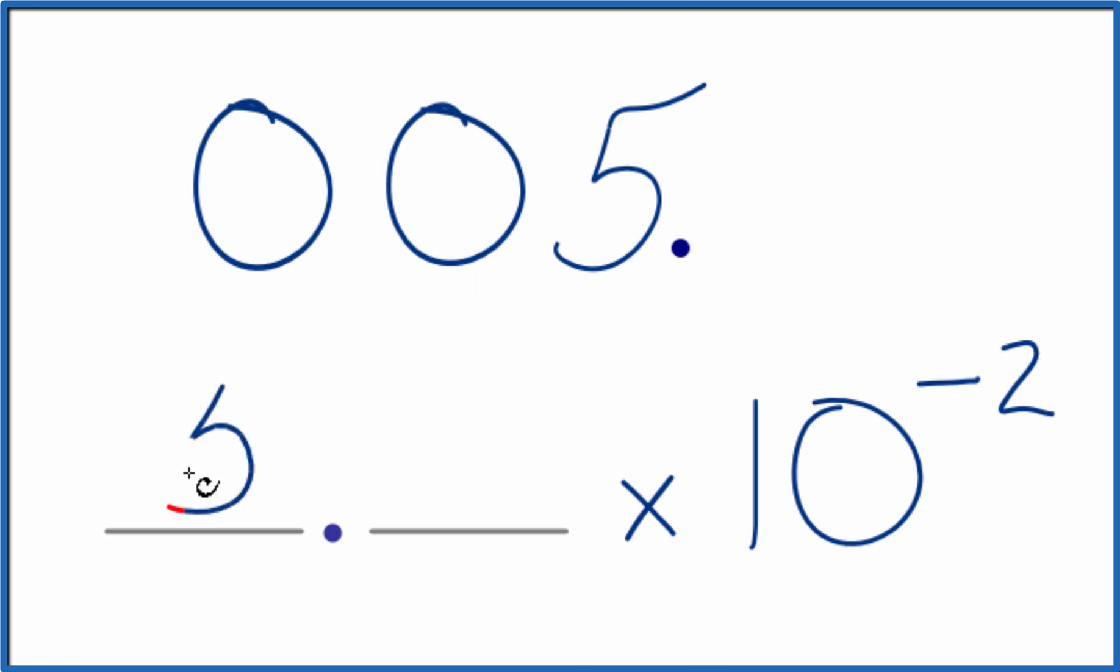Now we can take our whole number, put that right here. I would probably just leave this as 5 times 10 to the negative 2. That's the same as 0.05. You could put a 0 here. Check with your teacher to see if they want you to do that.